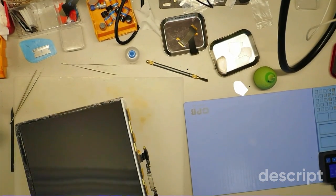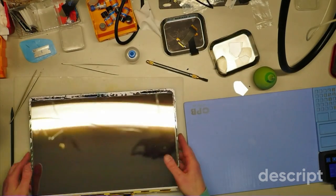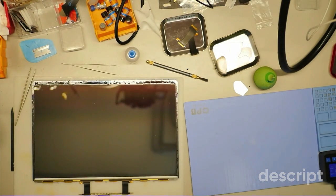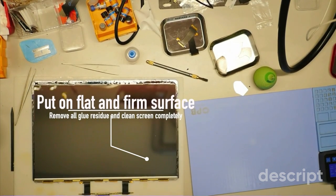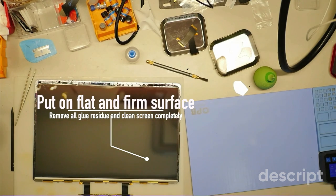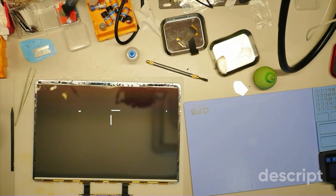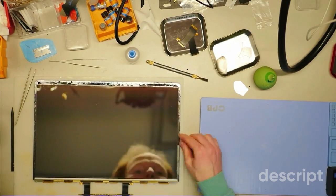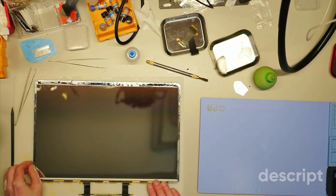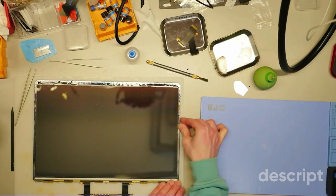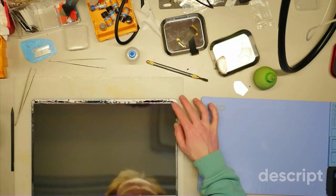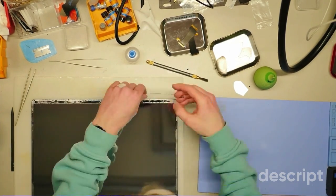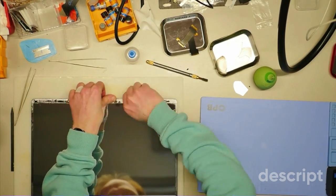Now you need to clean the screen itself. I usually just use my finger and then I use IPA to clean the rest of the surface. Usually it takes around 10 or 15 minutes to clean, so be patient. Don't put any pressure on the screen.